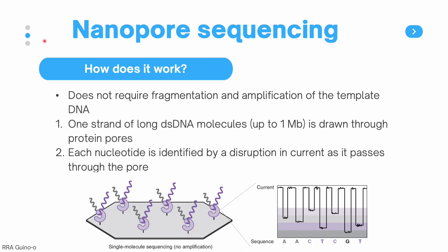Lastly, we will talk about nanopore sequencing. Unlike other methods, nanopore sequencing is unique because it does not require fragmentation and amplification of the template DNA. Instead, it uses one long double-stranded DNA molecule, up to one megabase pairs long — equivalent to one million base pairs — drawn through a protein pore. Each nucleotide is identified by a disruption in the current as it passes through the pore, and the sequencer detects these different changes in current produced by each nucleotide base.